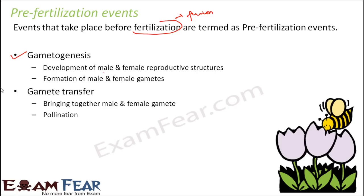The next thing that has to happen is gamete transfer. Even if the male and female gametes are formed, they need to meet each other so that fusion can take place. So formation of gametes and gamete transfer are the two pre-fertilization events.